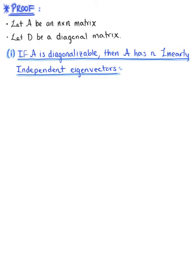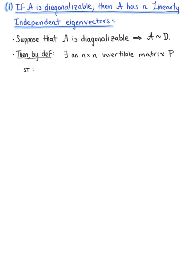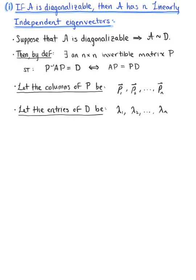To begin, let's suppose that matrix A is diagonalizable, or in other words, matrix A is similar to matrix D. Then we know by the definition of similarity that there exists an n by n invertible matrix P, such that the inverse of matrix P times matrix A times matrix P equals the diagonal matrix D, which is equivalent to saying that matrix A times matrix P is equal to matrix P times matrix D. So let's let the columns of matrix P be defined as vector P sub 1, vector P sub 2, all the way up to vector P sub n. And we'll also let the diagonal entries of matrix D be lambda sub 1 all the way up to lambda sub n.